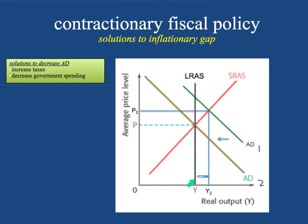That's what the government wants to do. We're operating out here — a lot of people have jobs — but price levels are going up, and increased price levels are not good. So the government wants to figure out how to decrease aggregate demand. Remember the components of aggregate demand are C plus G plus I plus X minus M. The two that are important here are G and consumption. If the government increases taxes, people have less money to spend and the C factor of aggregate demand will bring it in. And if they also decrease government spending — the G factor — then we'll get back to the original long-run sustainable output and price level of P and Y.